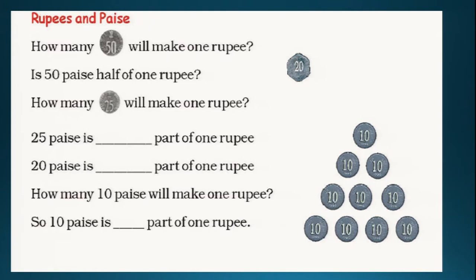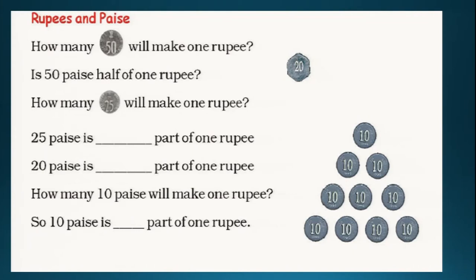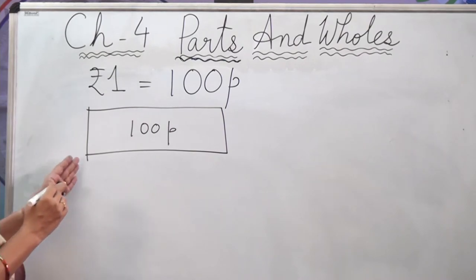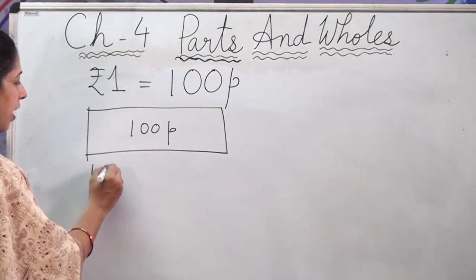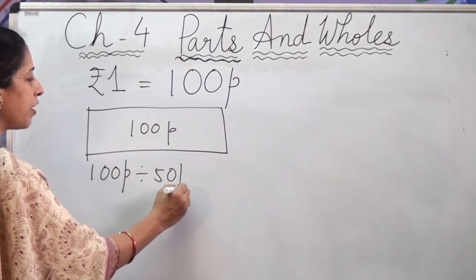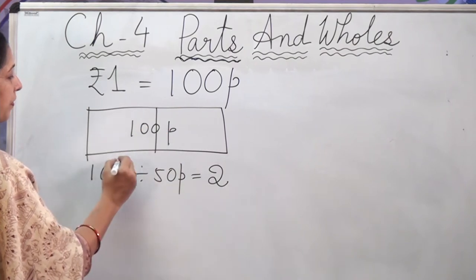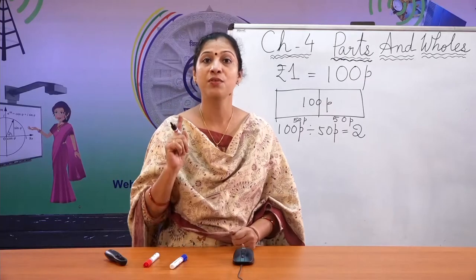The question is: how many 50 paise will make 1 rupee? We know that 1 rupee equals 100 paise. So we have to find out how many 50 paise coins are in 100 paise. 100 paise divided by 50 paise equals 2. That means we can have two 50 paise coins — when combined together, we get 1 rupee.